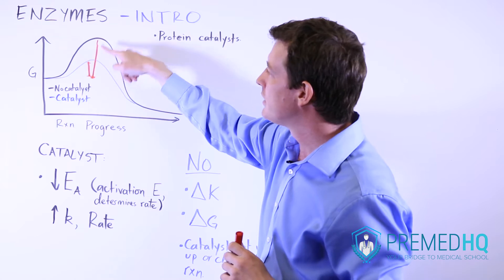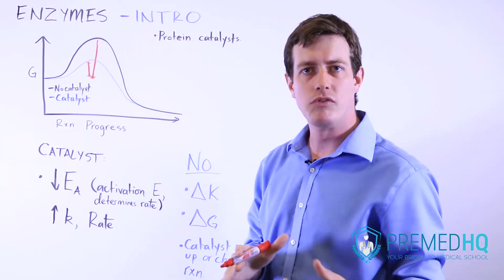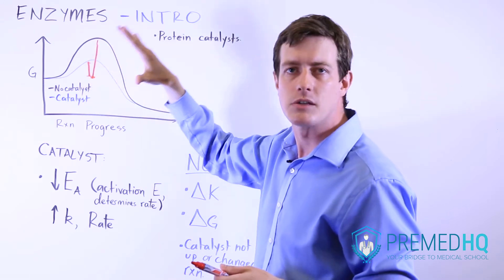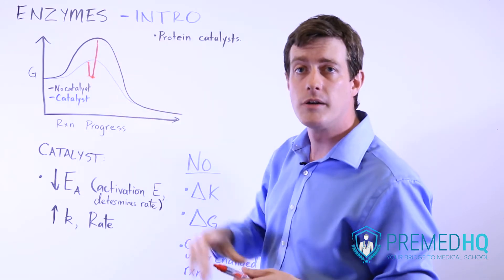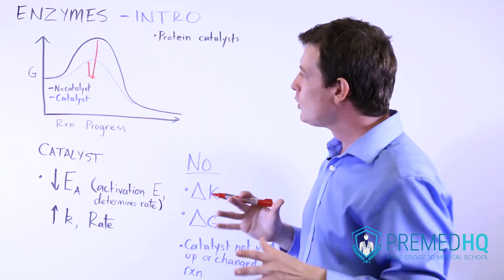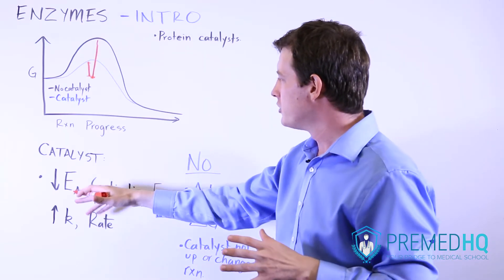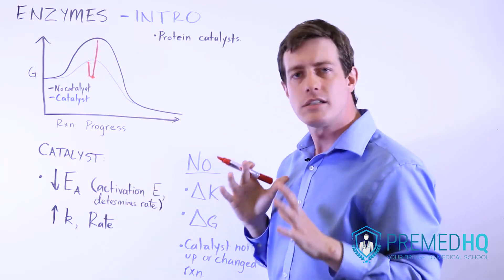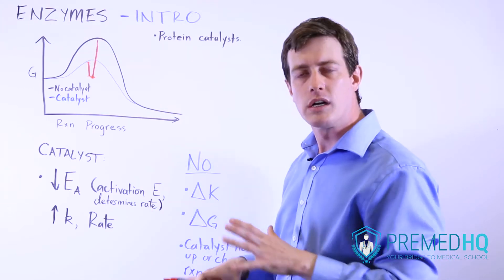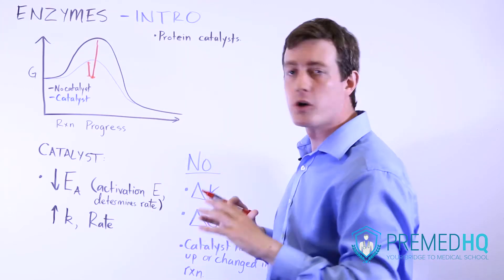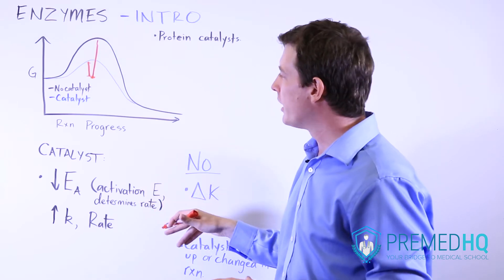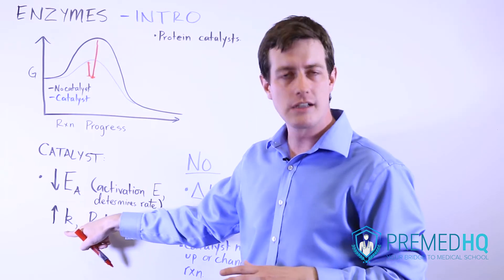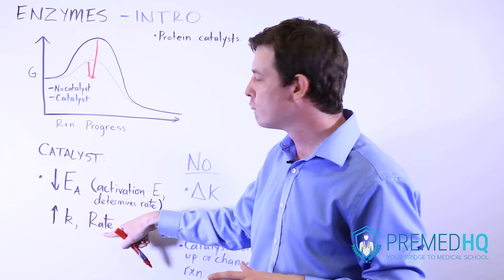Once you reach that transition state it's easy for the reaction to move forward, but it's difficult to find enough energy to get there. Enzymes make it much easier. The role of lowering activation energy is key because activation energy is the primary determinant of rate. If activation energy is lower, the reaction occurs more quickly. A catalyst lowers the activation energy, thus increasing the rate constant and increasing the rate of reaction.